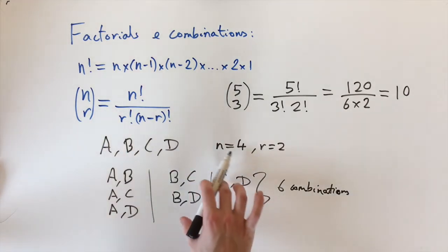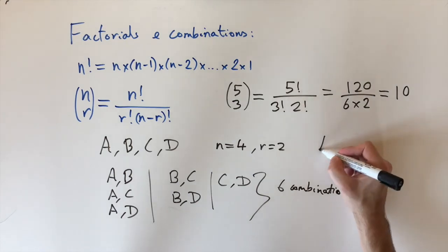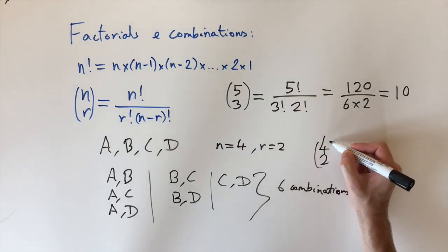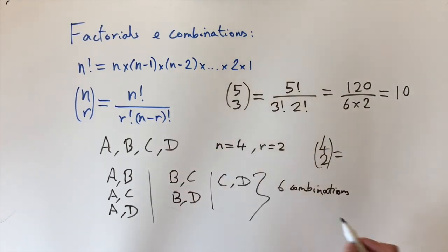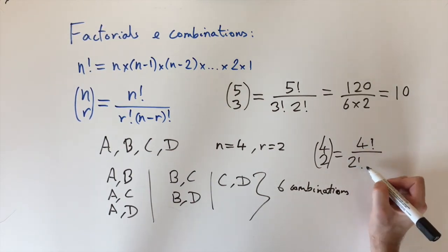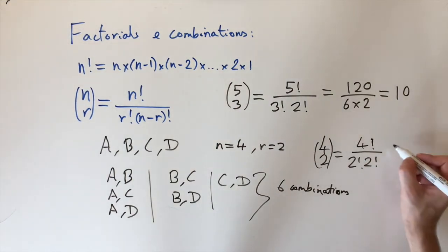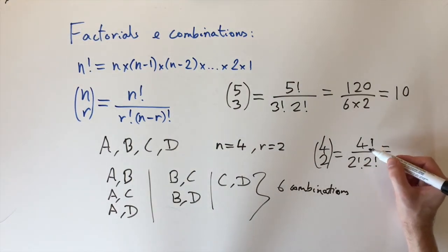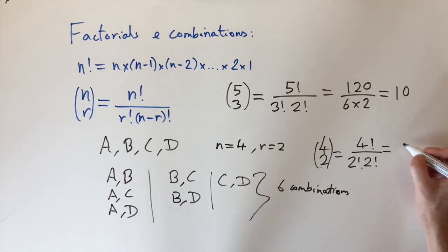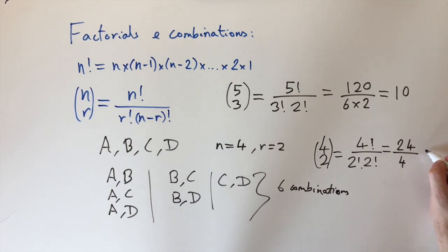There's a formula for this — we just plug in n equals 4 and r equals 2. So 4 choose 2 equals 4 factorial divided by 2 factorial times 2 factorial. That's 24 divided by 2 times 2, which is 24 divided by 4, giving exactly 6, which is what we wanted.